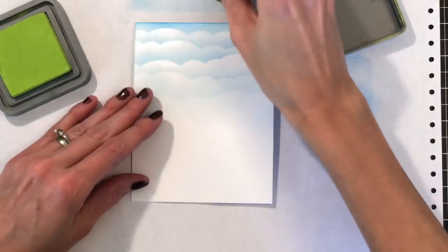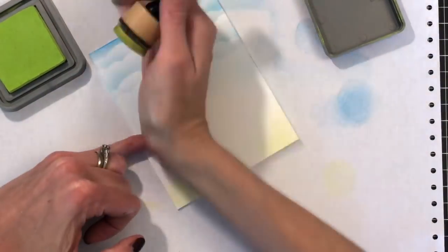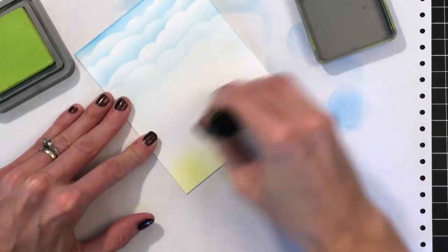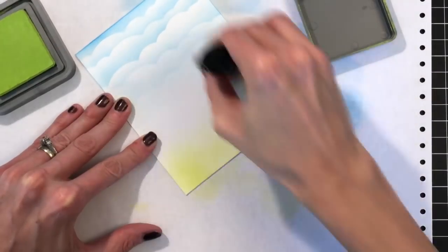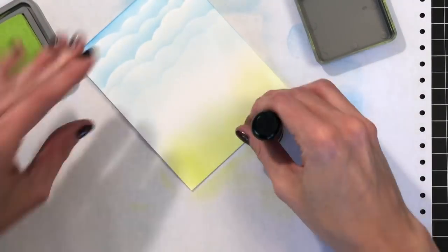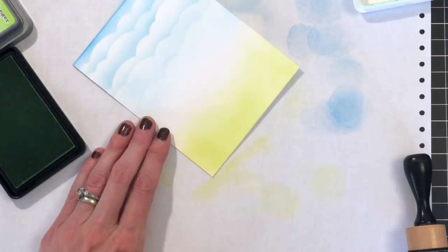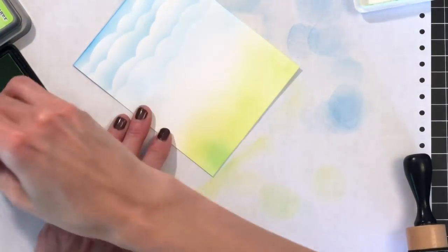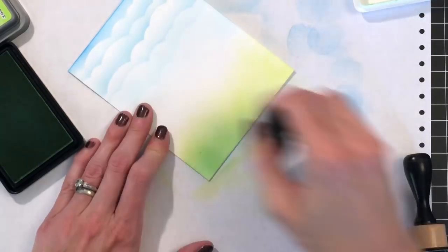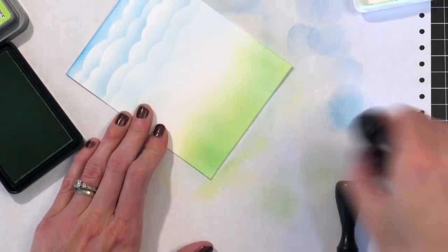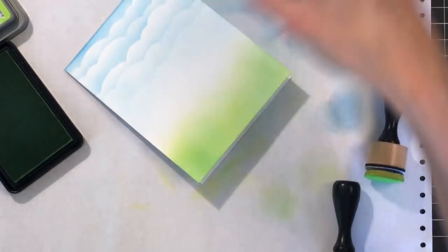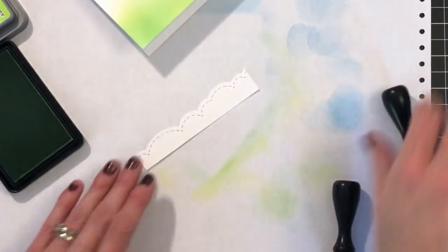Now I'm moving on to the grass. I'm just going to blend some Distress Oxide Twisted Citron down at the bottom. It's kind of a really pretty lime green. But I'm going to amp up the green a little bit by grabbing some Chirp Chirp. This is Waffle Flowers Chirp Chirp, this is a dye ink. And I'm going right on top of that Twisted Citron with this really like a true Kelly green right over the top.